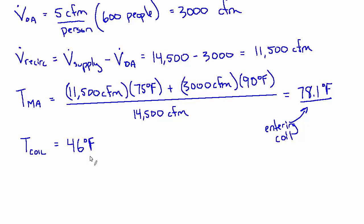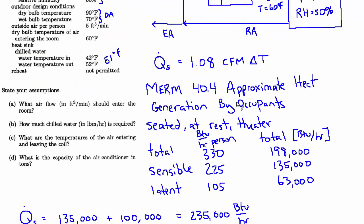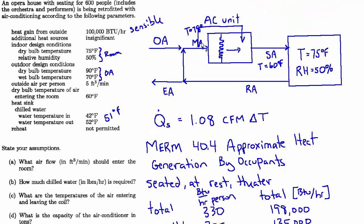Of course, that air is too cold. You don't want to supply 46 degree air. So you mix it after the coil with the mixed air that bypassed the coil, which is 78 degrees. And you take some portion of 46 degree air and 78 degree air, mix them together.